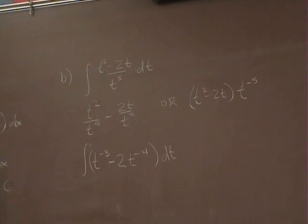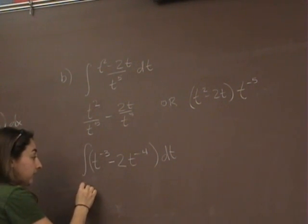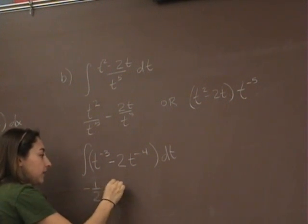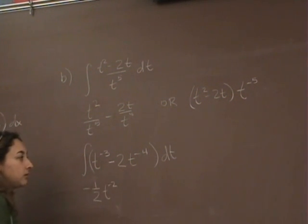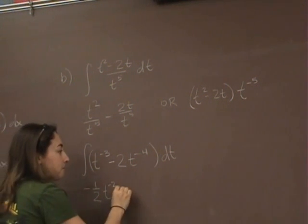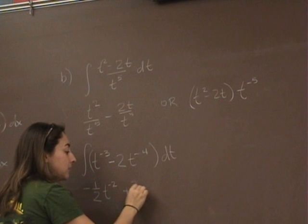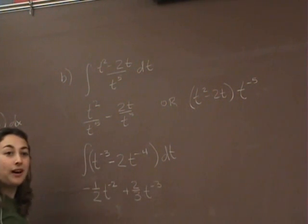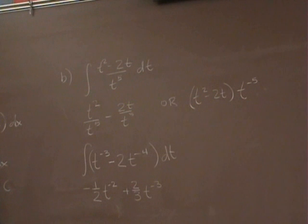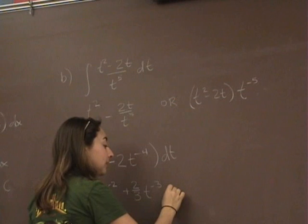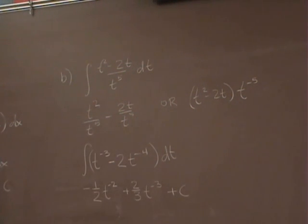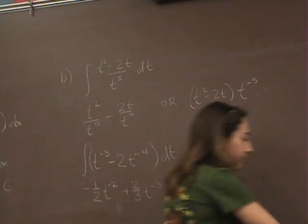So that's simplified. Now you can find the antiderivative. What's the antiderivative of t to the negative three? Negative one half t to the negative two. What about minus 2t to the negative fourth? Plus two thirds t to the negative three, not negative five. Because you add one, not subtract one. And we're not done. What else do we need? Plus c.